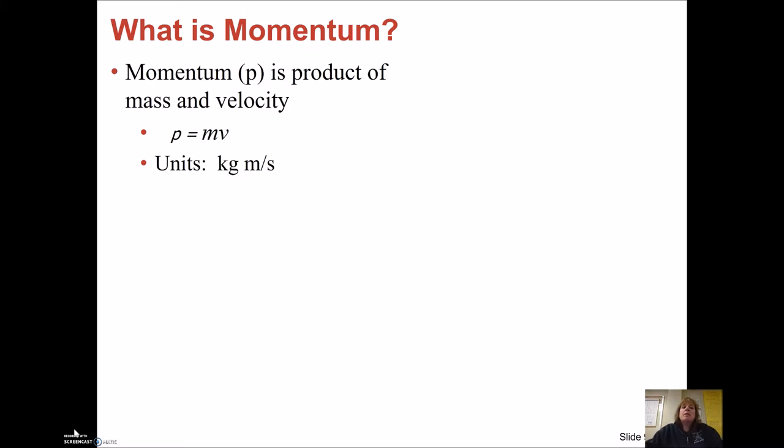Now what momentum is, and the symbol of momentum is P. I'm not really sure why, but I guess we wouldn't want to use M because that stands for mass. Momentum is a product of mass and velocity. So if I were to calculate the momentum of an object, I'd take its mass in kilograms and multiply by its velocity in meters per second. The units of momentum are kilogram meter over second.